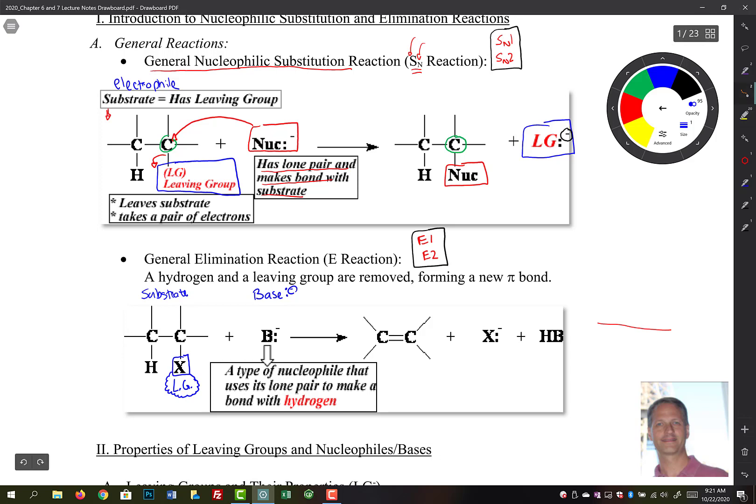So again, this base, it's a type of nucleophile that uses its lone pair to make a bond with hydrogen here. So what's kind of happening in this reaction, and again, the mechanism is going to be different. But if we wanted to put in arrows, we're coming around here, making a bond with that H. And then what happens is the electrons between that carbon and hydrogen swing down here, and that becomes a new pi bond. And then we have to kick off our leaving group here.